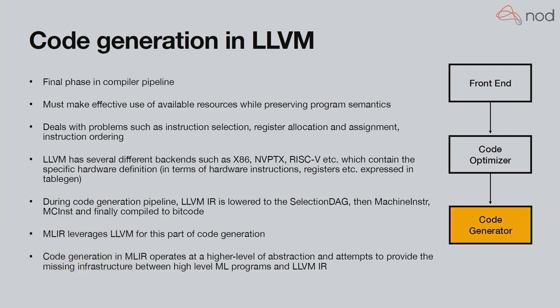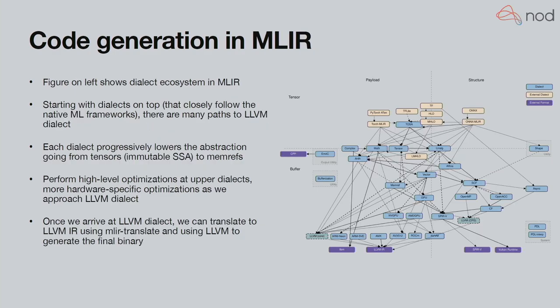LLVM is a great compiler infrastructure supporting a wide variety of back ends from x86 to ARM to NVIDIA and beyond. But LLVM operates at too low a level, missing many optimization opportunities for ML workloads. MLIR fills this missing infrastructure gap between high-level representations of neural networks and LLVM IR. Machine learning researchers implement programs in high-level frameworks like TensorFlow, PyTorch, and JAX. MLIR helps progressively lower that computation graph into something that can be executed efficiently on-device.